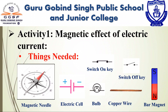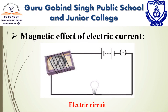Magnetism has been known since very ancient times. Oersted discovered a very interesting phenomenon. In his experiment, he used a wire, a magnetic compass needle, an electric cell, a bulb, and a plug key. He completed the electric circuit by connecting the wire, electric cell, plug key, and bulb, and then marked the position of the magnetic needle.